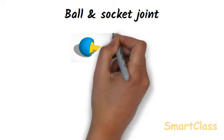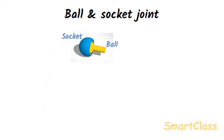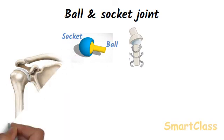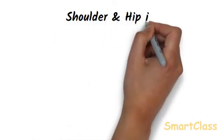In a ball and socket joint, one end of the bone has a round shape like a ball which fits into a socket in the other bone. The ball-type end of one bone can turn freely in the socket of the other bone, so the bones can be turned in any direction. Ball and socket joints occur at the shoulder and hips. A ball and socket joint allows much more movement than a hinge joint — in fact, it allows the maximum variety of movements compared to all other joints in the human body.